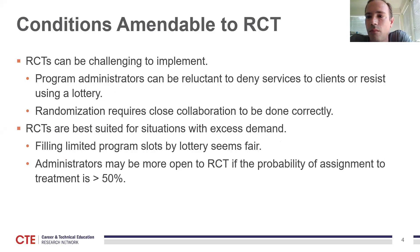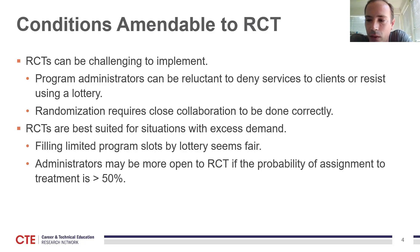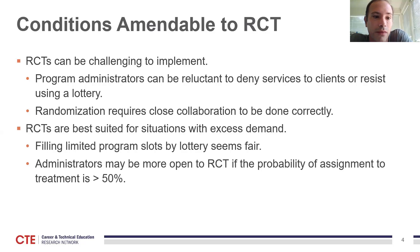RCTs are really challenging to implement successfully. A lot of times program administrators don't want to deny services to their clients and resist using a lottery to determine who gets services, for very good reasons in many cases. Integrating random assignment into program operations can be difficult and may require close collaboration with administrators to ensure randomization is done correctly. RCTs are also costly, and it can take a good while to observe the outcomes you're interested in. If you need results now to make program improvements, an RCT can be a limitation unless it's using retrospective lottery data.